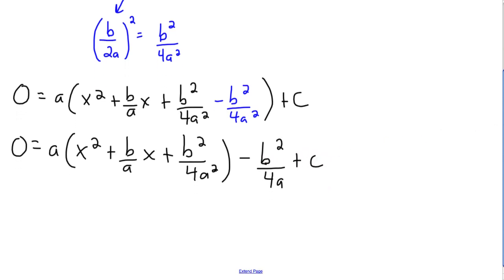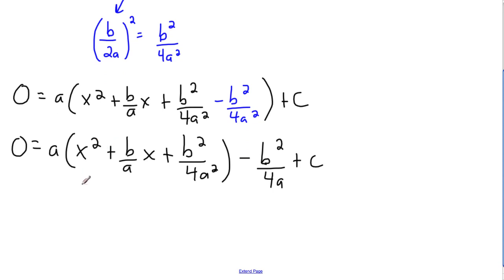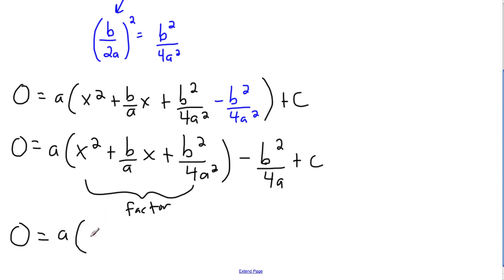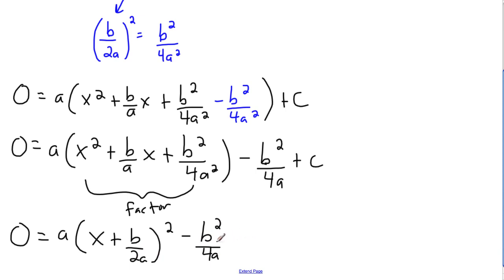Now I can factor this. It may look super ugly, but there's a trick: when you've completed the square, this trinomial factors as x plus whatever half the coefficient was, all squared. So it becomes x plus b over 2a, all squared. Then I just have the remaining terms: minus b squared over 4a plus c.